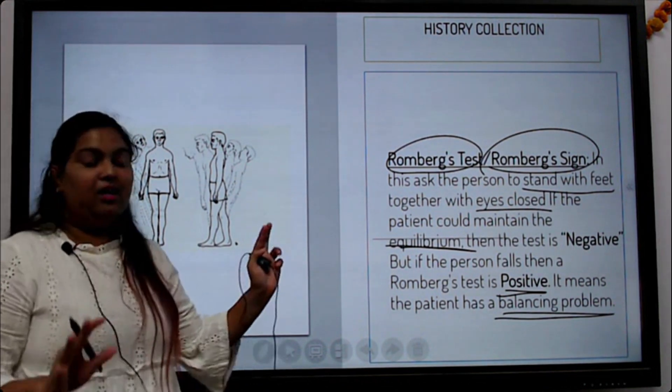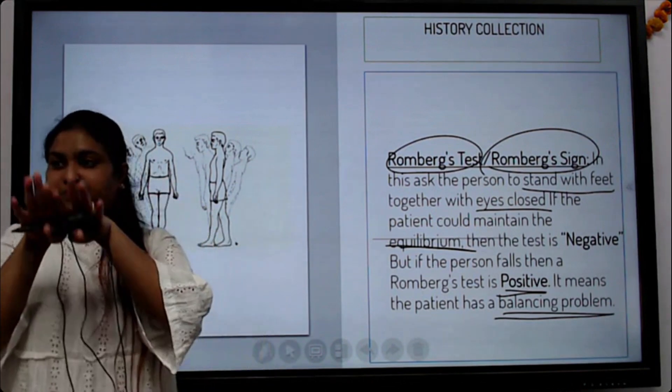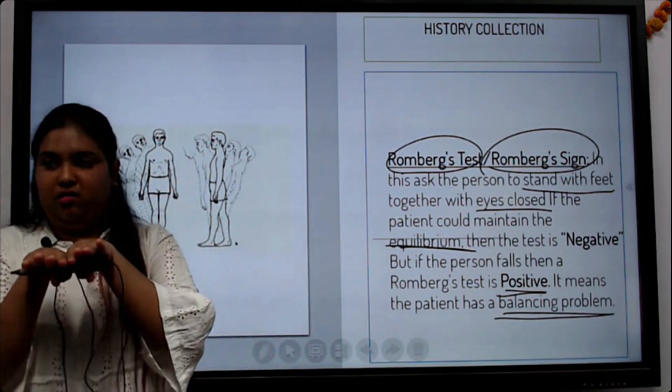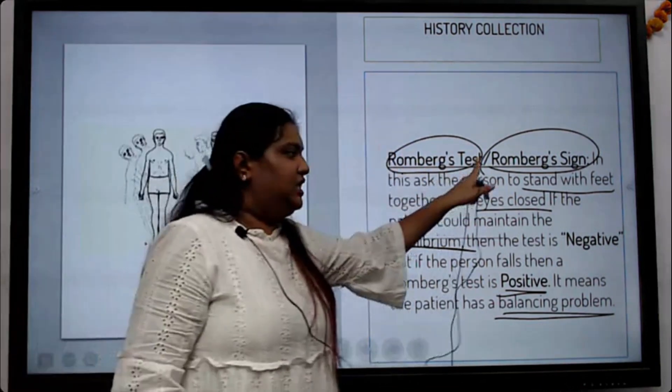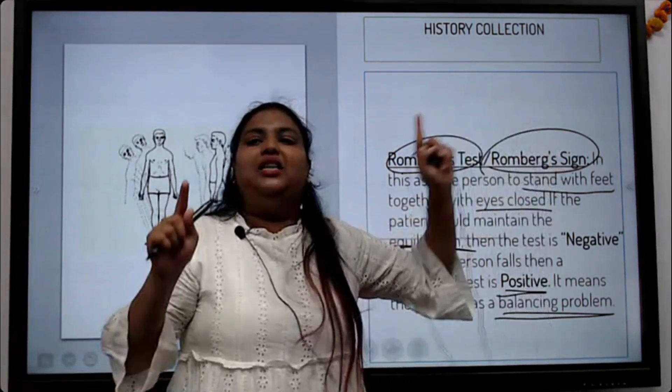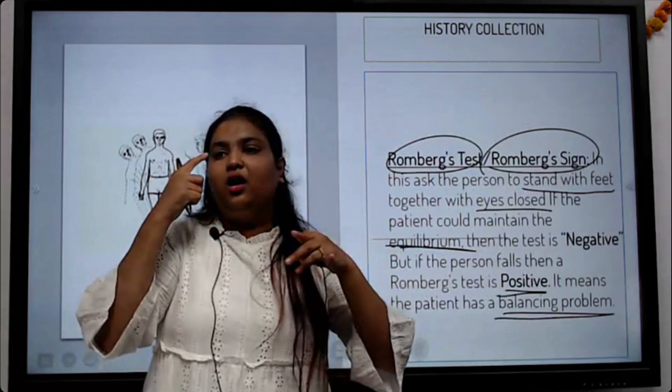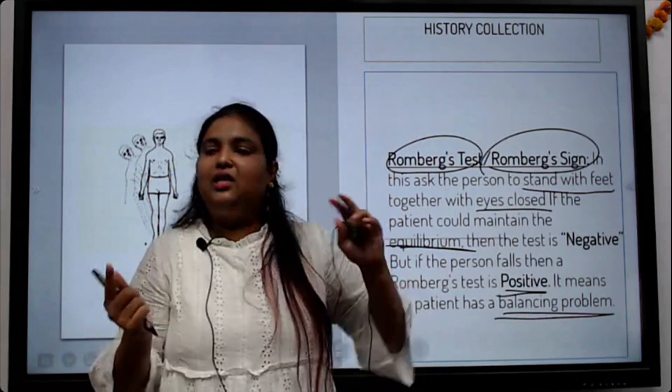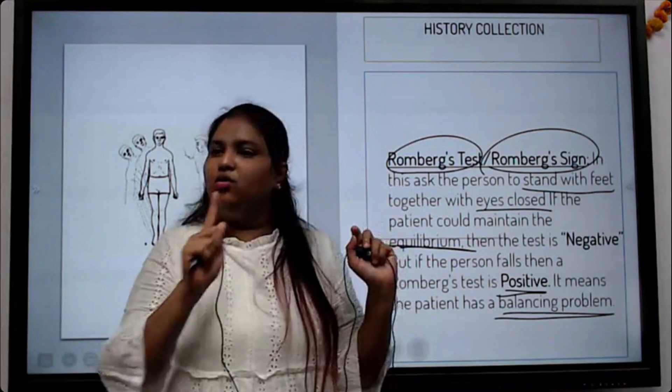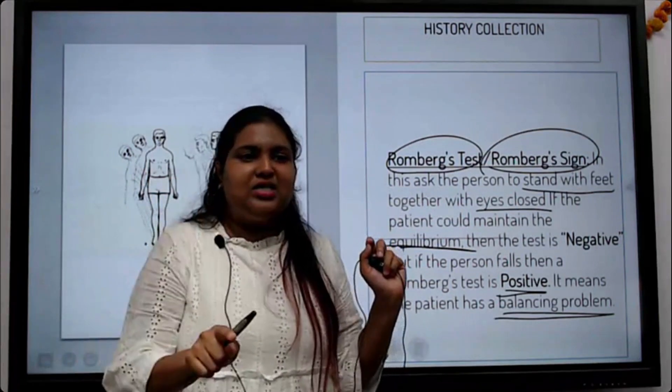What is the method which you are using? Feet together method. It is called the Romberg test or Romberg sign. But the method which you are using is feet together, closed eyes. Negative means no problem, positive means there is a problem.